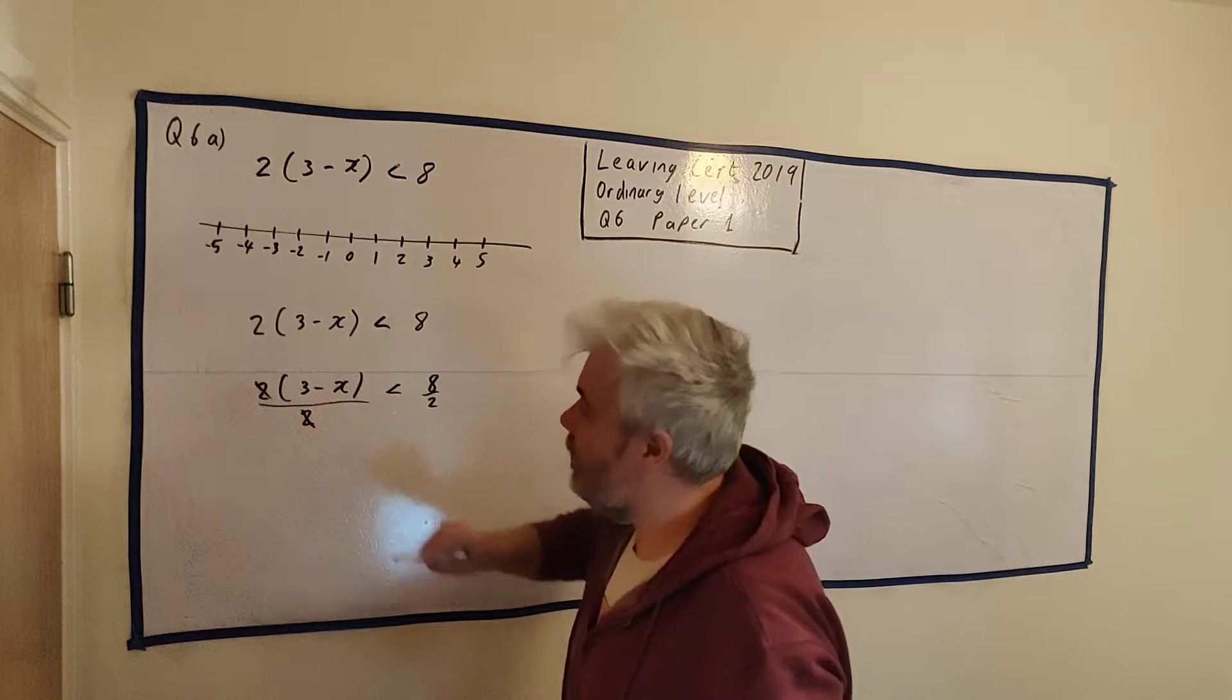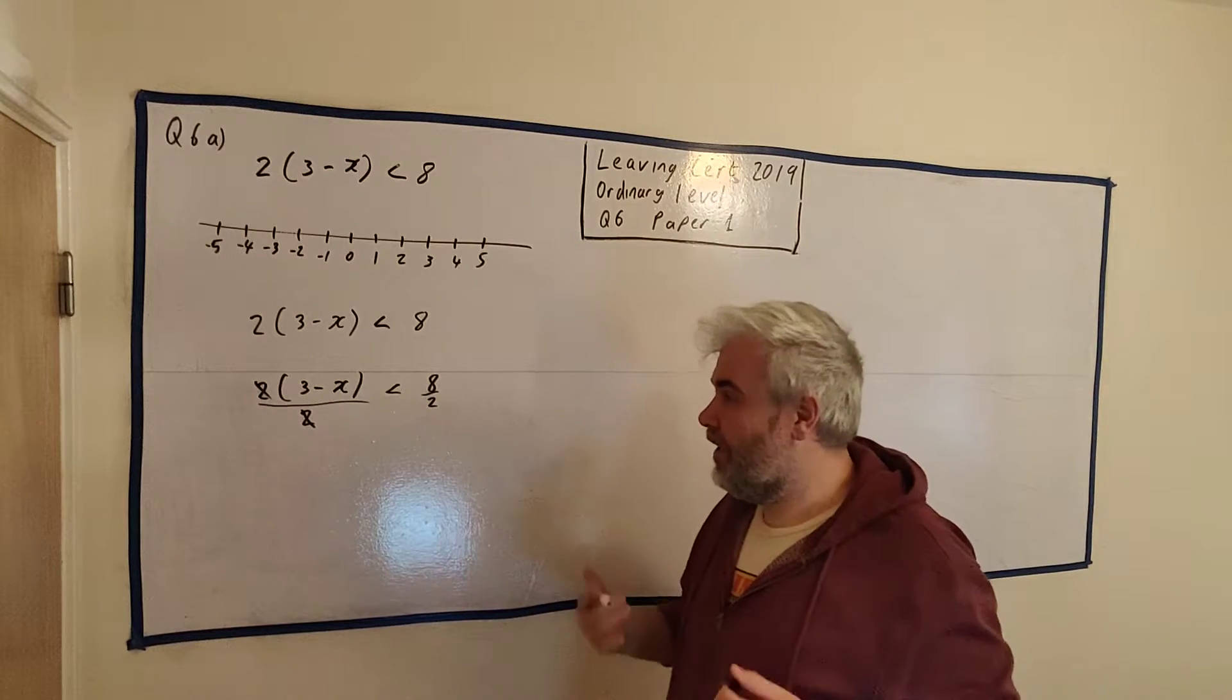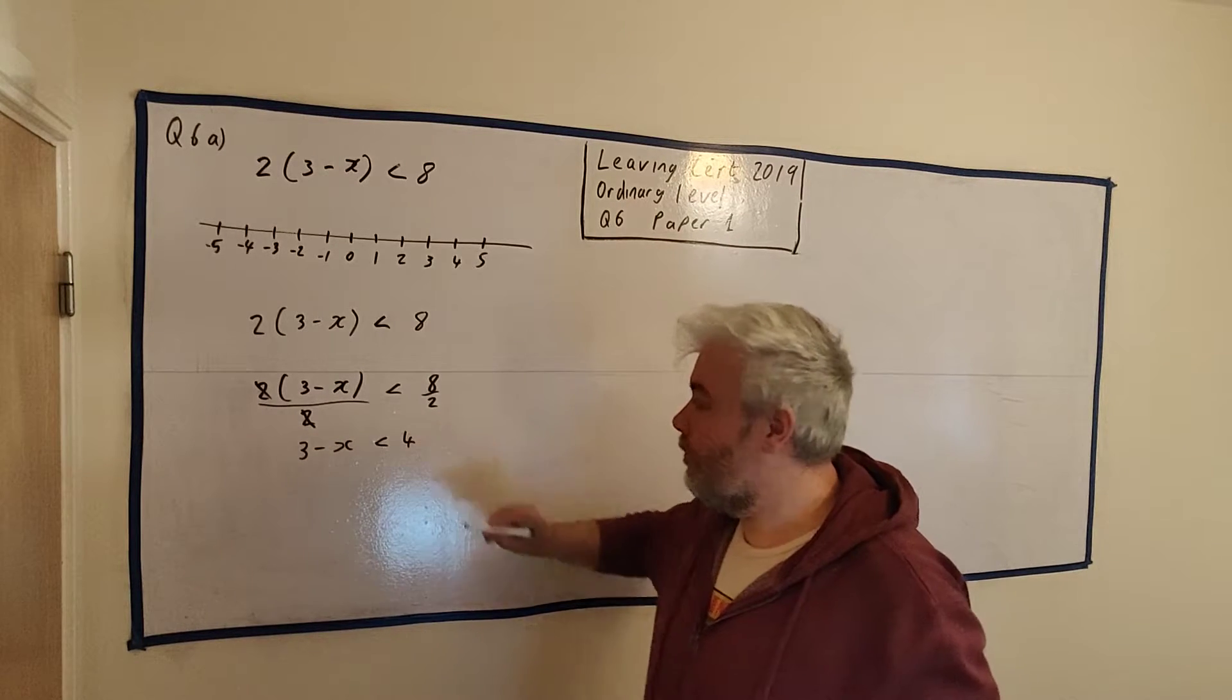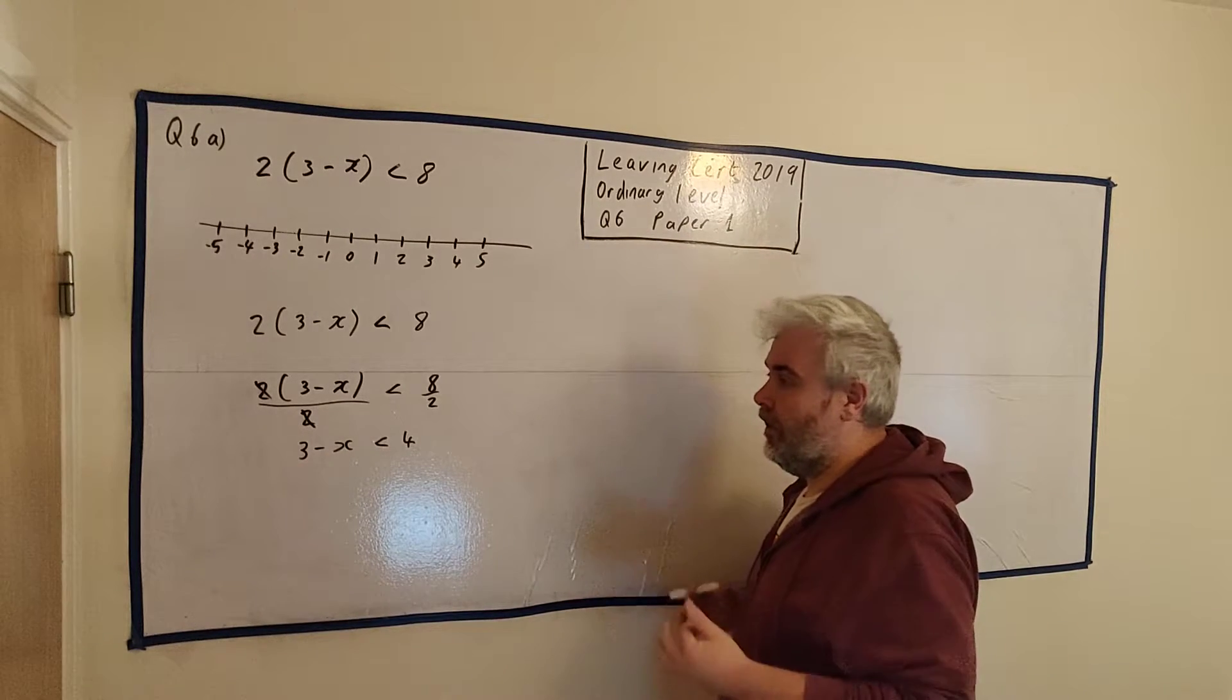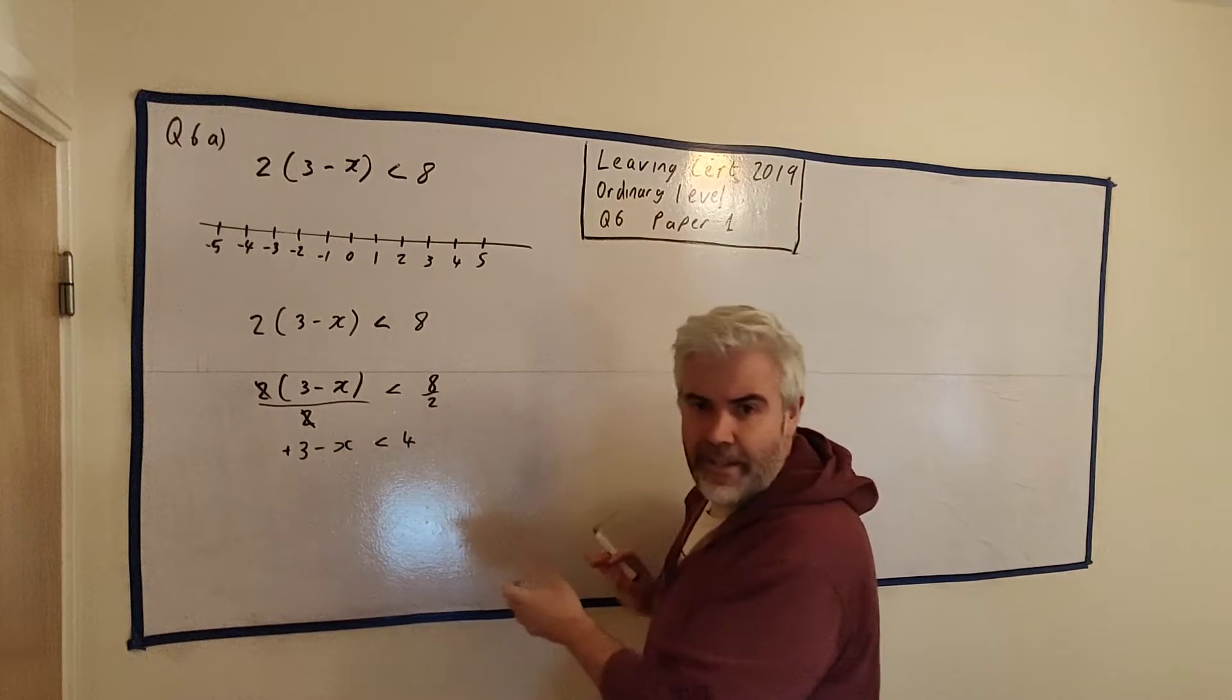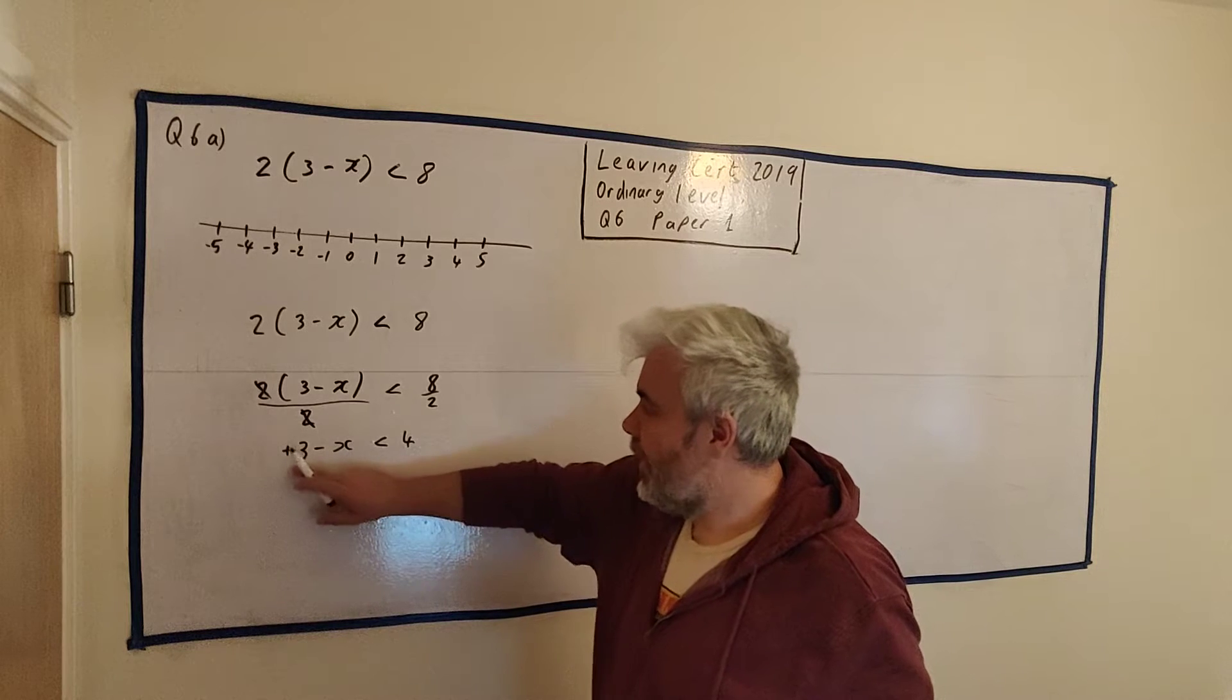2 divided by 2 disappears. We're left with 1, but we don't bother writing it in. 3 minus x is less than 4. Now I'd like to get rid of this 3. What's this 3 doing? This 3 is actually adding. Lots of students think it's taking away. No, the x is taking away. The 3 is adding. There's a little invisible plus out front of it.